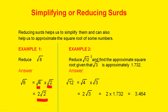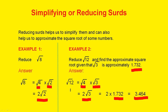Example 2: Reduce the square root of 12 and find the approximate square root, given that the square root of 3 is approximately 1.732. The square root of 12 is the square root of 4 times the square root of 3, because 4 times 3 is 12. The square root of 4 is 2, so the square root of 12 is 2 times the square root of 3. Since the square root of 3 is approximately 1.732, then 2 times 1.732 is 3.464, which is the approximate answer for the square root of 12.